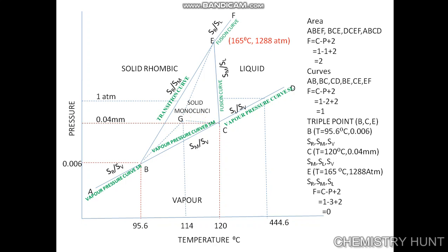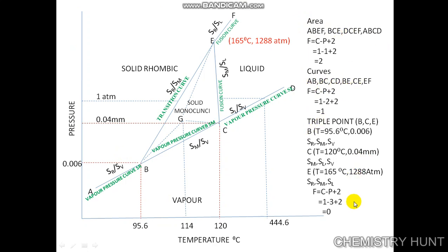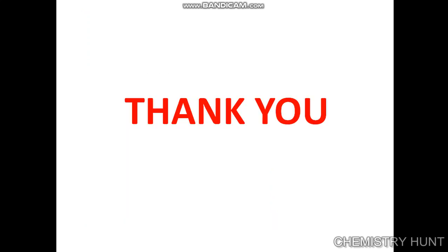At point G, the temperature is 144 degrees Celsius, where sulphur rhombic is in equilibrium with sulphur liquid, which is in equilibrium with sulphur vapour — a metastable triple point. In summary, the sulphur system has four areas, six curves, and three triple points. Thank you.